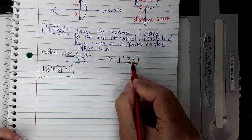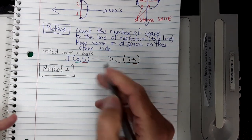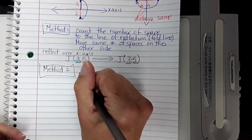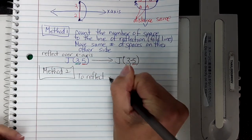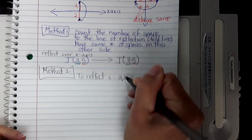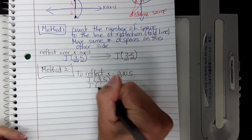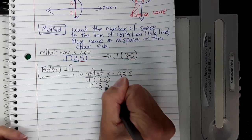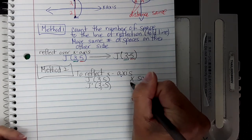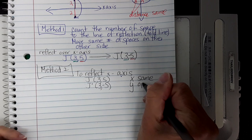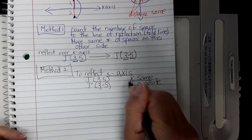5 became negative 5; the 3 stays the same. So that's another method you could use. To reflect over the x-axis: the x-part stays the same and the y-part becomes the opposite. Notice the line that you're reflecting over stays the same.